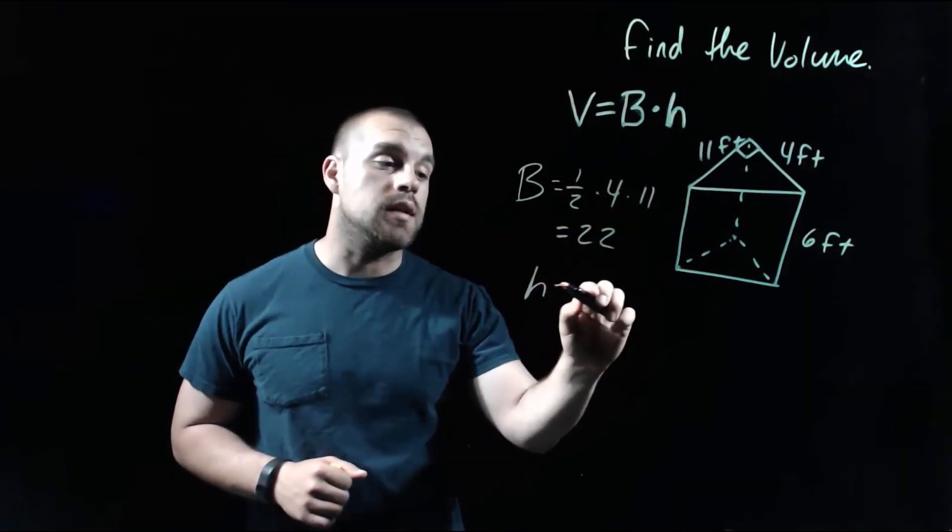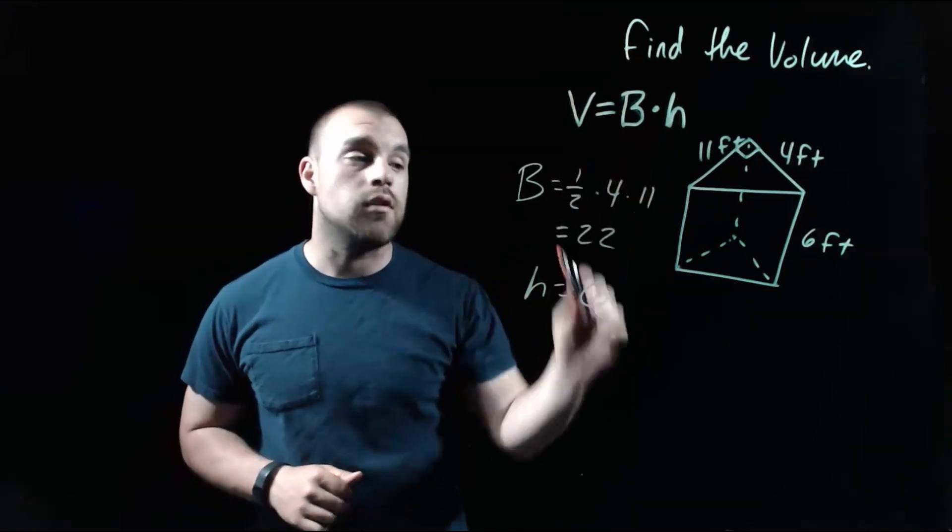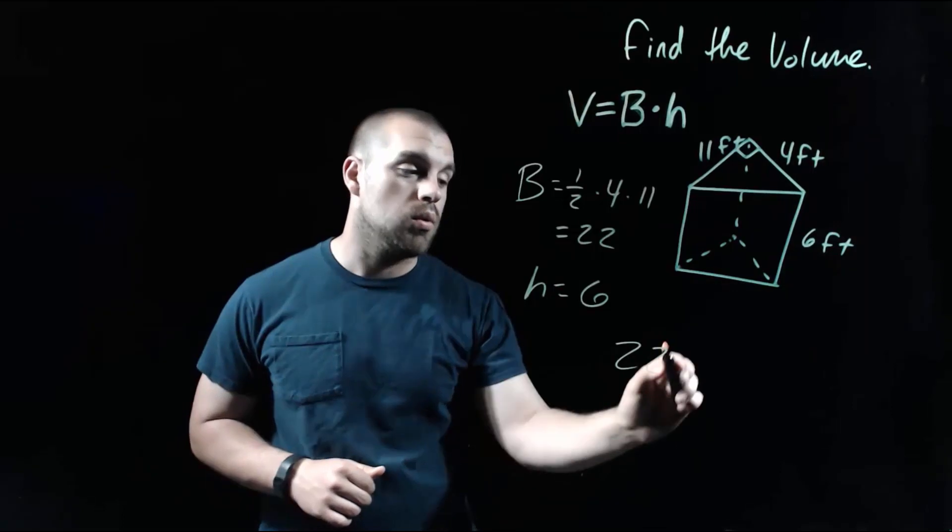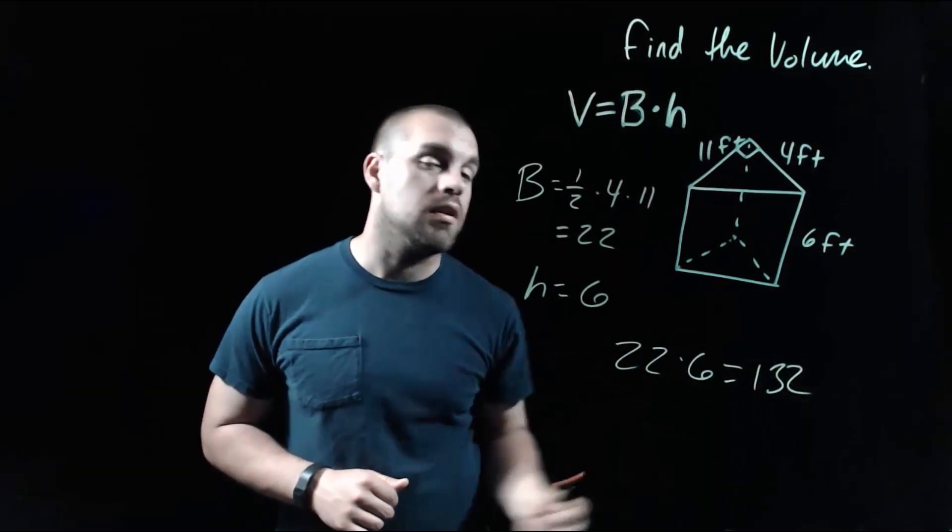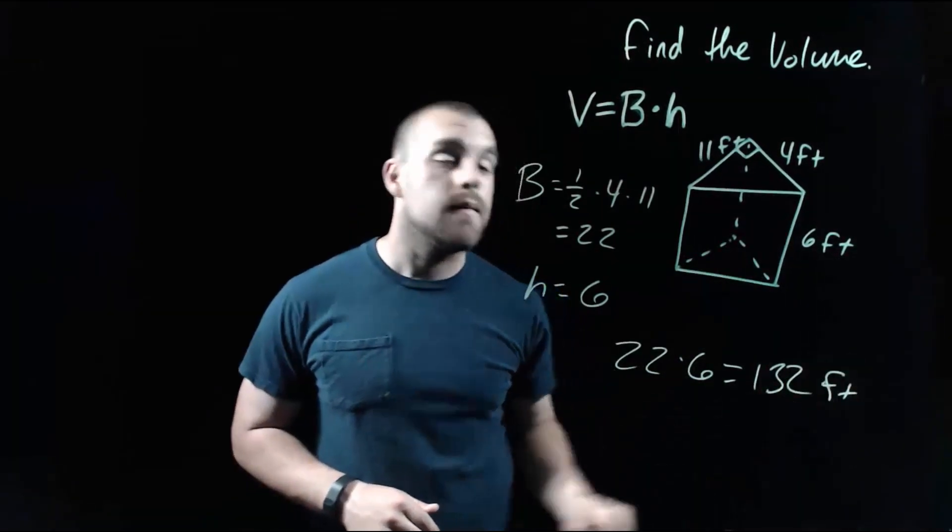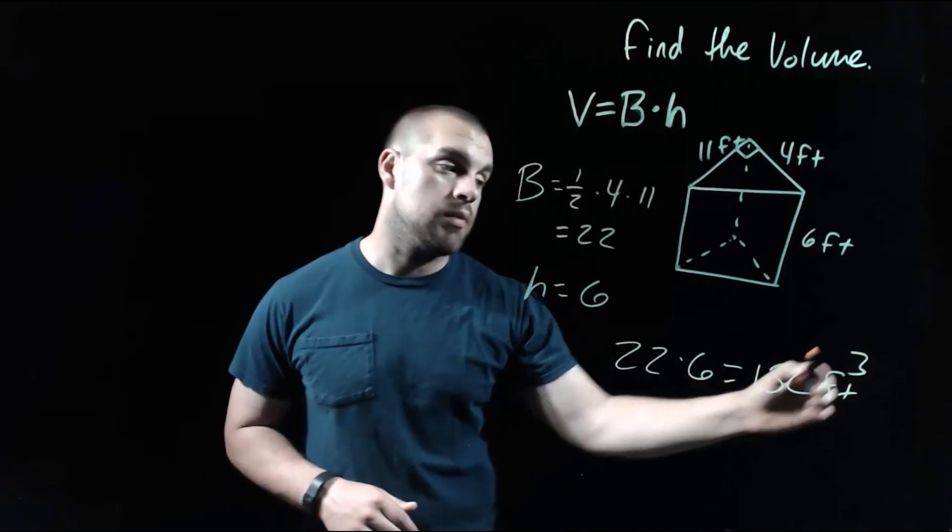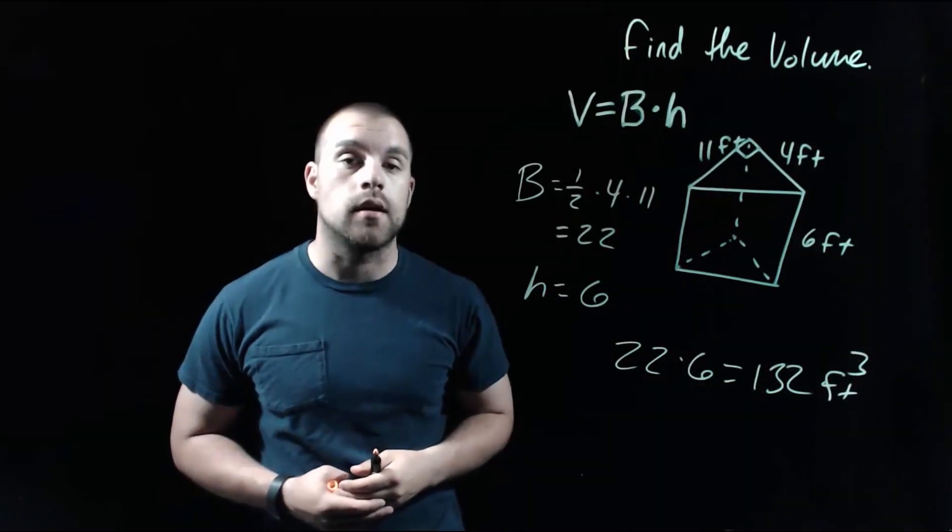And then if we're looking at the height of our prism, that's going to be our six foot length. So in order to find this volume, we're going to take our 22 times the six. When we do that, we get 132, but then we need to label our answer. Our measurements were given to us in feet, and this is volume, so we put a cubed on it. So 132 feet cubed as our volume.